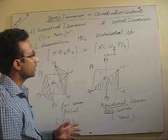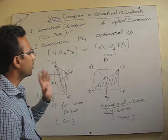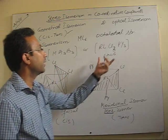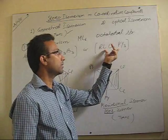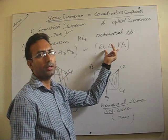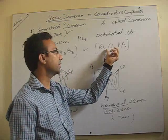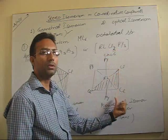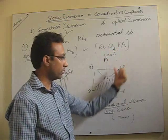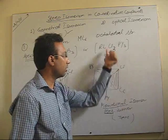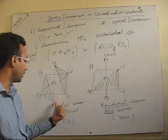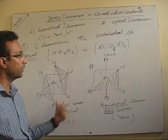In an example, the question can be asked like this: a complex is given to you and they will ask you to draw its mer isomer, so you have to draw it like this, or draw its fac isomer, so you have to draw it like this.